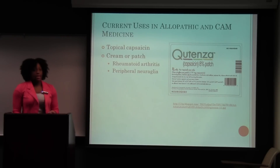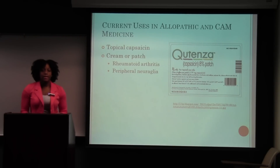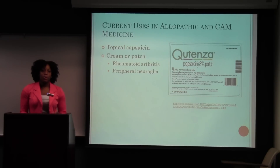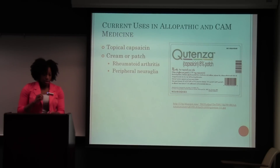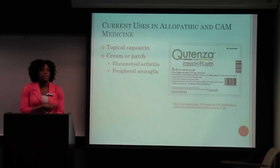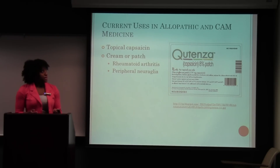Currently, it's used topically as a cream or patch to treat peripheral neuralgia or rheumatoid arthritis. It actually gets into the nerves, makes it hurt for a minute, then numbs the nerve, and in some cases can actually kill the nerve so that you don't feel the pain anymore. It's used both allopathically and in CAM medicine.